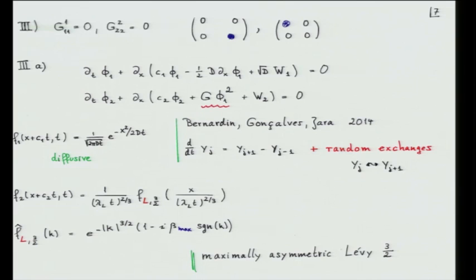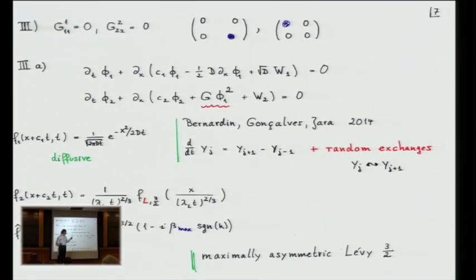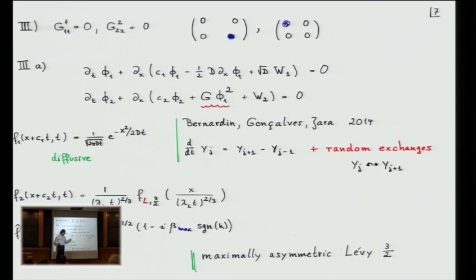There's an interesting case which so far is not really under control but would be very interesting to solve: if instead of the linear or quadratic potential you take some other function — surprisingly, you should take the exponential function, like in other corners of the subject. The exponential function seems to be the one where you could actually get some bounds, and in this case you get one KPZ mode and one Levy 5/3 mode.